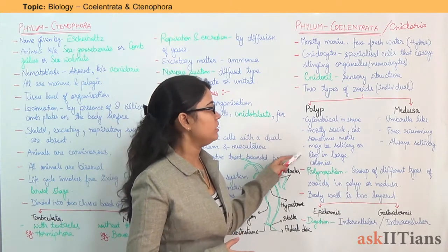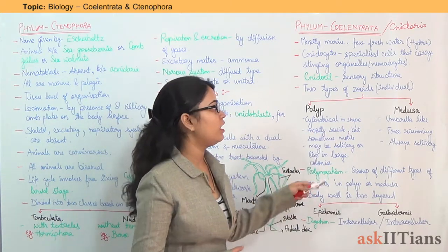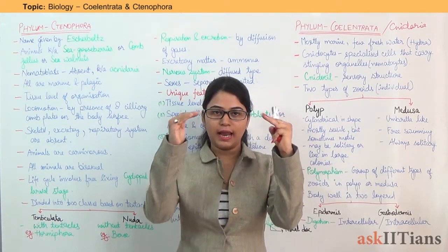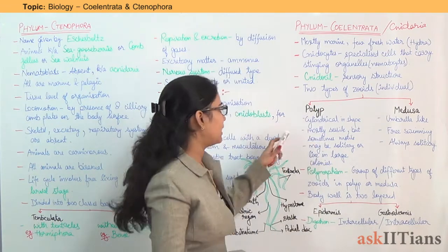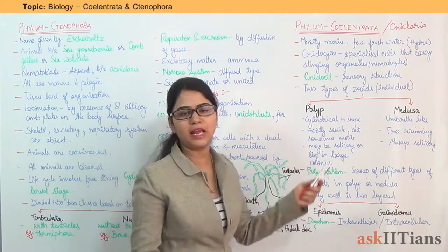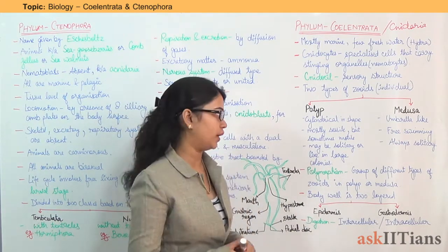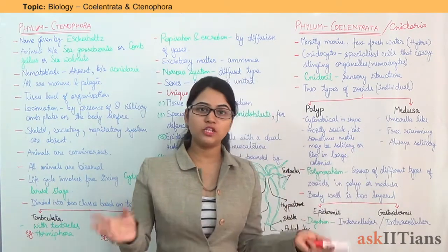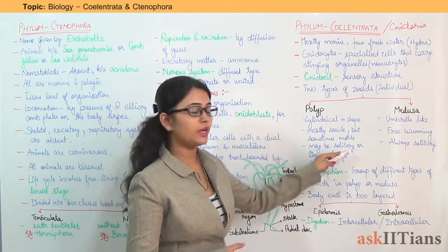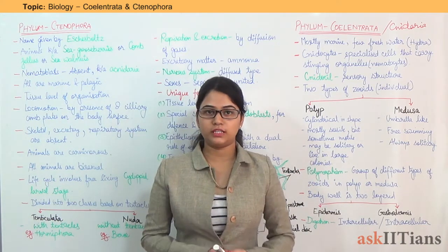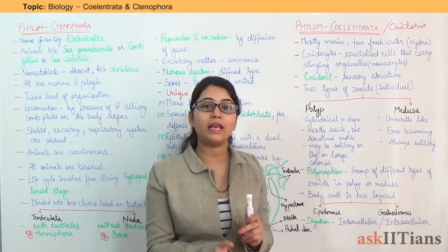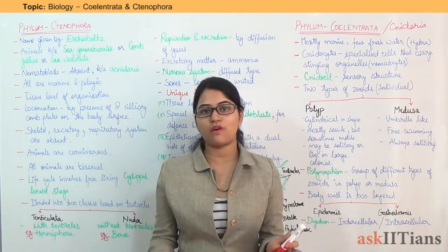Polyps have a cylindrical shape while Medusa have an umbrella-like shape. Polyps are mostly sessile but sometimes they are motile as well, while Medusa are free swimming. Polyps may be solitary or live in large colonies, while Medusa are always found solitary.